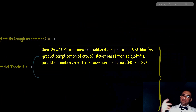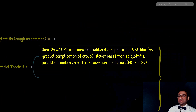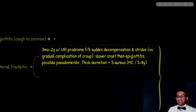How do we differentiate tracheitis from epiglottitis? Tracheitis has a prodrome and therefore a slower onset than epiglottitis. The second very important distinctive feature is the presence of thick secretions that can form a pseudomembrane in the pharynx, covering the tonsils and upper pharynx. This indicates Staphylococcus aureus as the underlying cause, and it usually occurs in older kids, typically ages five to eight years.